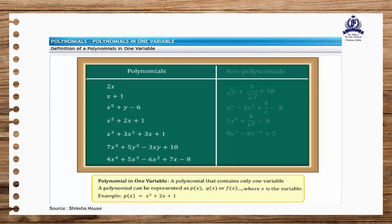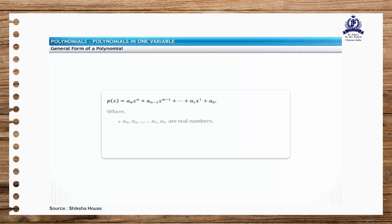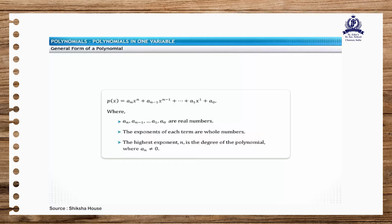For example, p of x is equal to x squared plus 2x plus 1. The general form of a polynomial in one variable is p of x equals a_n·x^n plus a_(n-1)·x^(n-1) plus ... plus a_0, where a_n, a_(n-1), and so on till a_0 are real numbers. The exponents of terms are whole numbers. n, the highest exponent, is the degree of the polynomial, where a_n is not equal to 0.